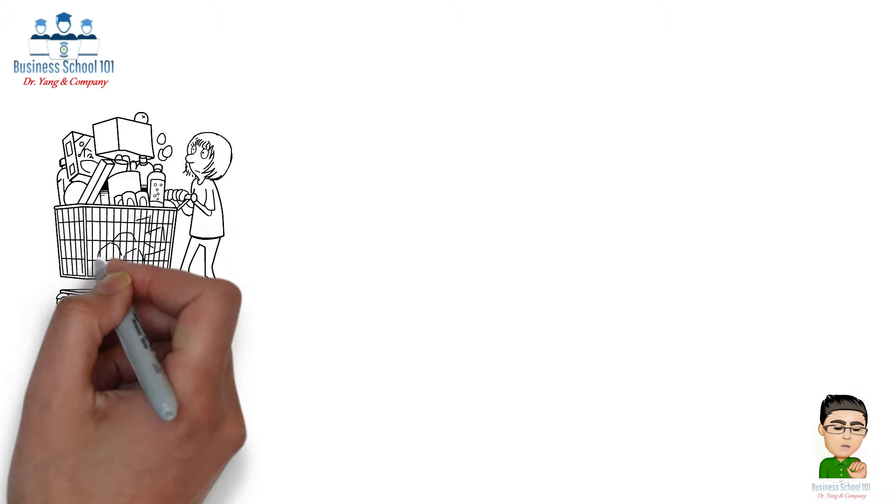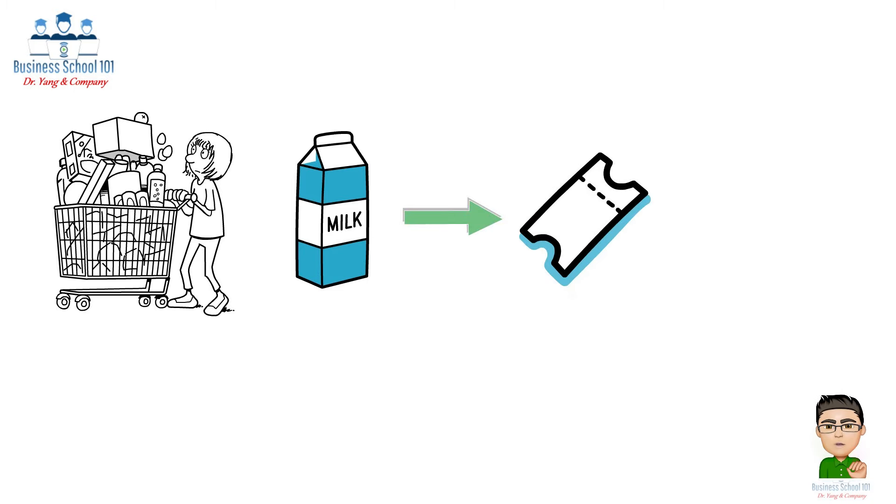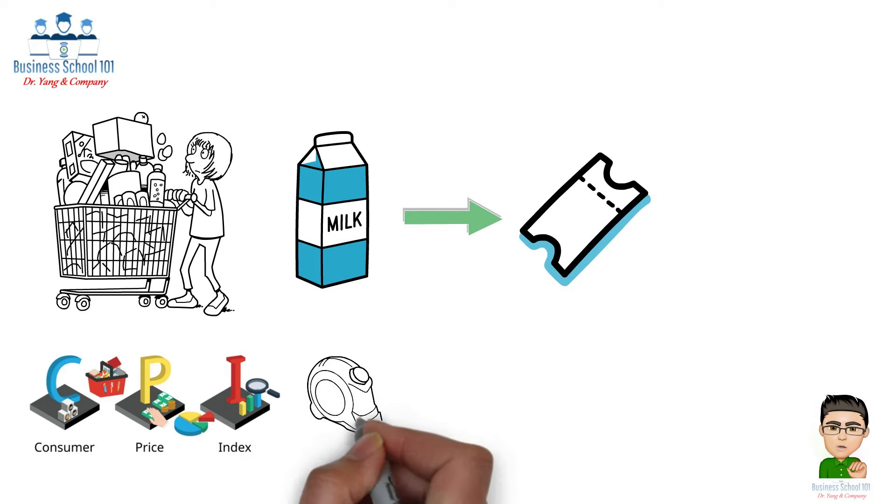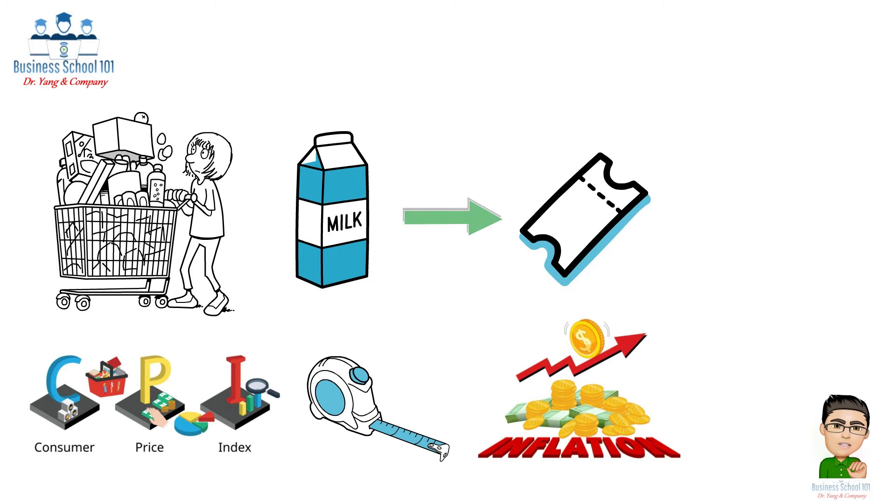Imagine a shopping cart loaded with everything from milk to movie tickets, representing what you and your community buy. The Consumer Price Index, or CPI, is like a yardstick that measures how much this cart's contents cost now compared to before. It's a snapshot of our economic climate, showing us the pulse of inflation.